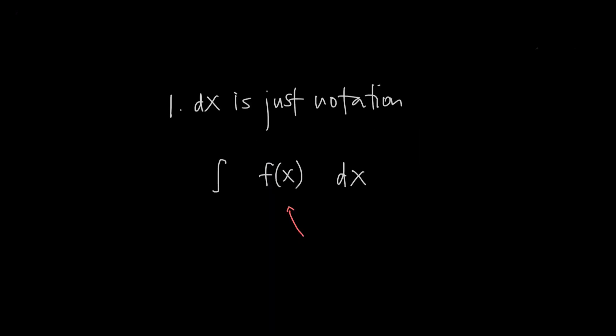Answer number one, dx is just notation. In other words, the integral symbol and the dx are like bookends that frame the function that's supposed to be integrated. That function in the middle is called the integrand, by the way. Basically the integral symbol and the dx just work together to say, integrate whatever is between us.